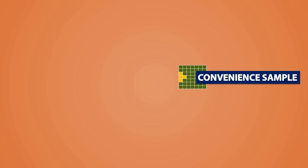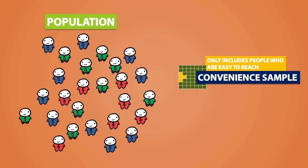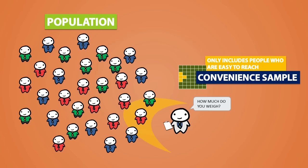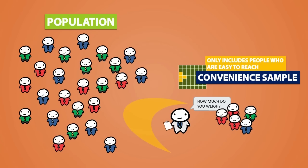A convenience sample only includes people who are easy to reach. If this is our population and a researcher comes along to interview people, then he would only talk to the people that are closer to him to be part of the sample. This is a biased sampling method because not everyone in the population has an equal chance of being part of the sample. Only people that are of convenience to the researcher will be interviewed.